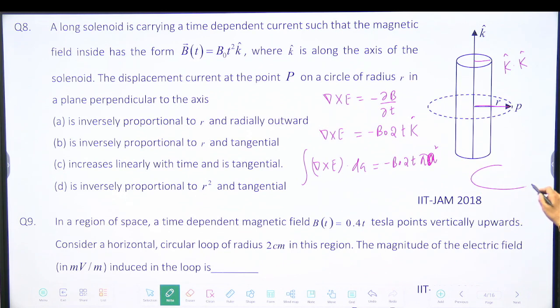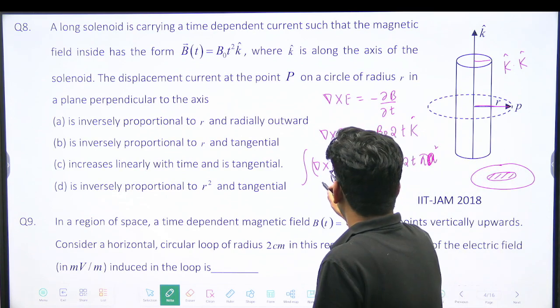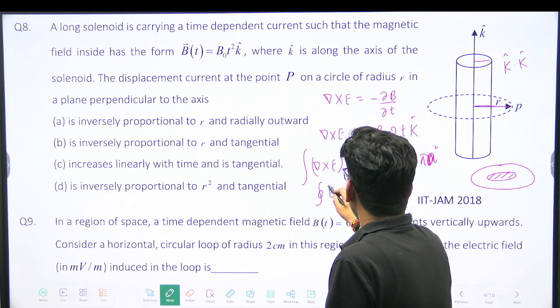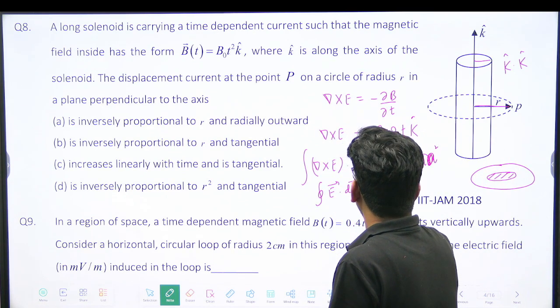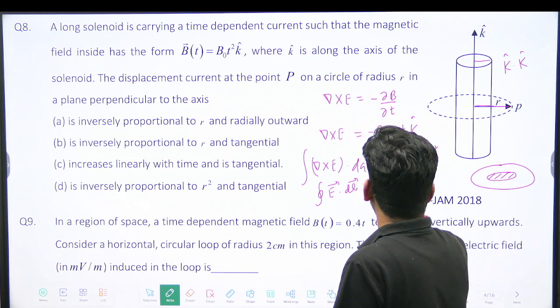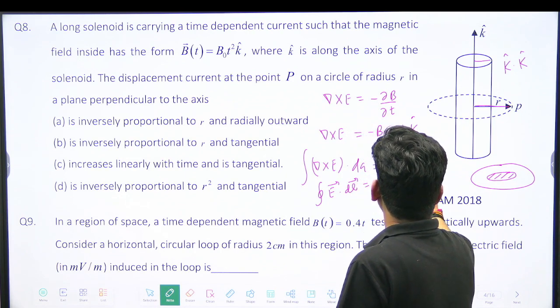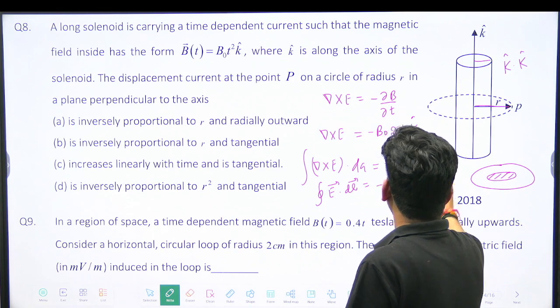Suppose this is your area, but magnetic field is only coming from this. So this is the only effective area. Outside, magnetic field is not there. So this side I can write E dot dl will be minus B₀ 2T pi A squared.